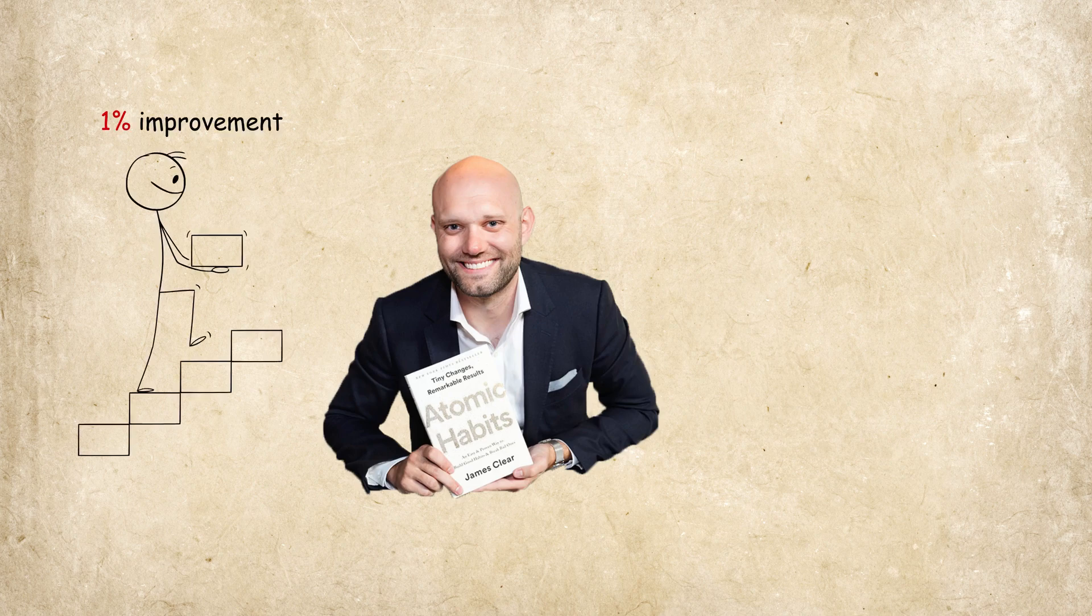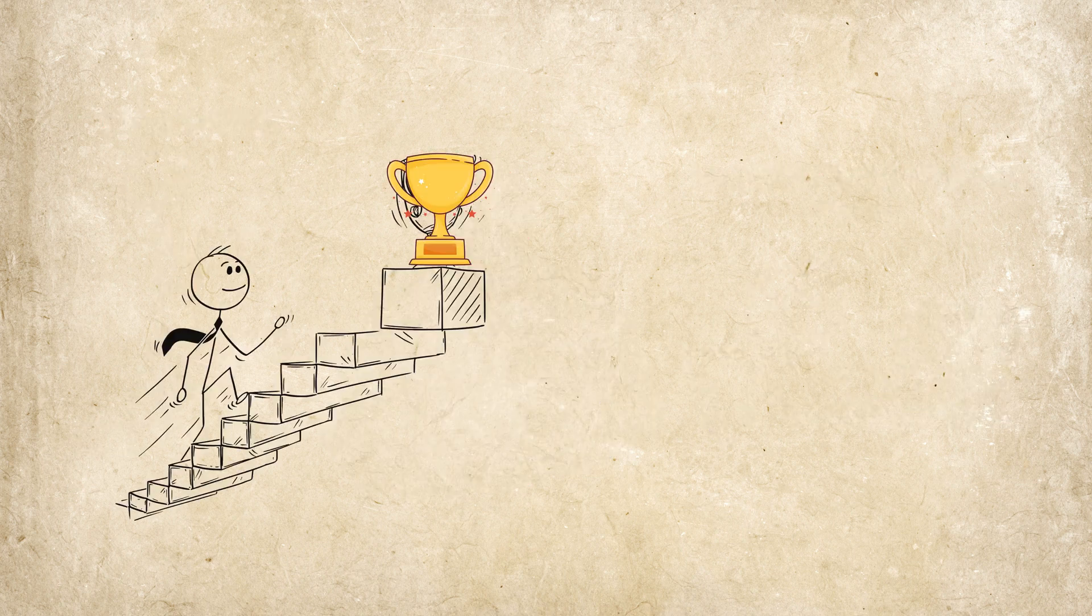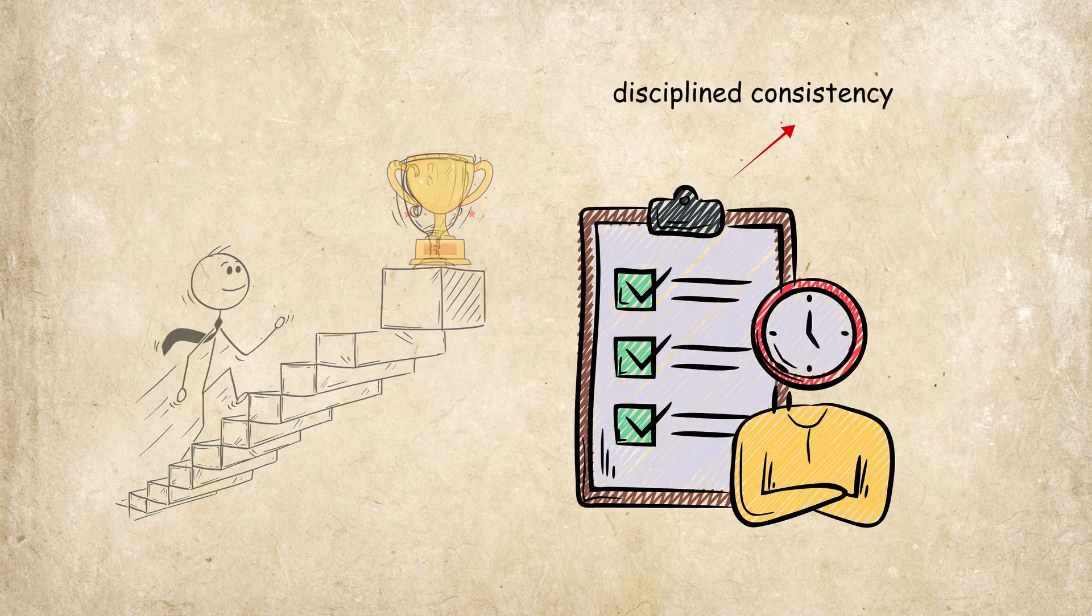As James Clear explains in his book Atomic Habits, a tiny 1% improvement each day results in becoming 37 times better over a year. The goal isn't volume. It's disciplined consistency.